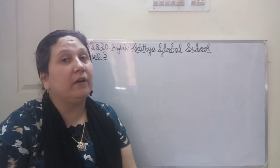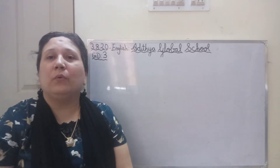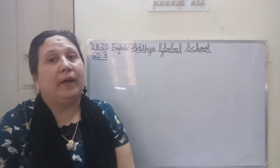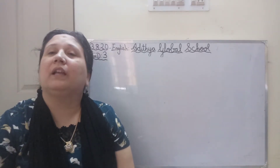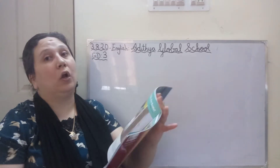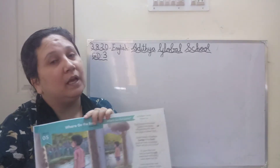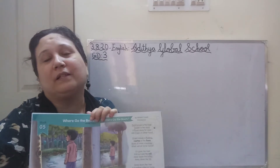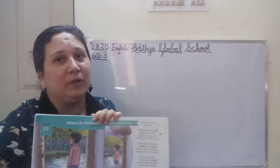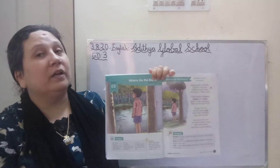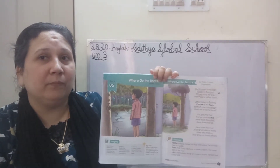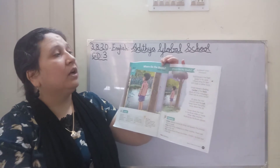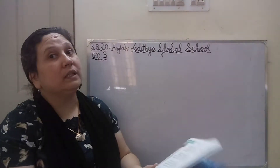We had a recap of a previous poem that we did. So what was it? 'Where Go the Boats?' Many of you made colorful boats — it was really very pleasant and nice to see it in your workbook. So the poem name is 'Where Go the Boats,' written by Robert Louis Stevenson.